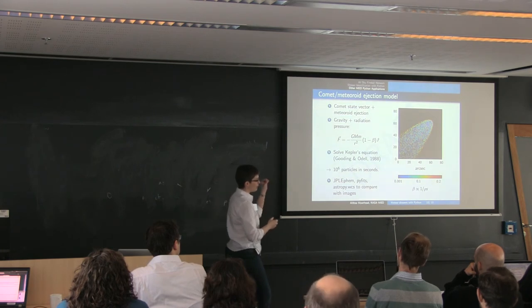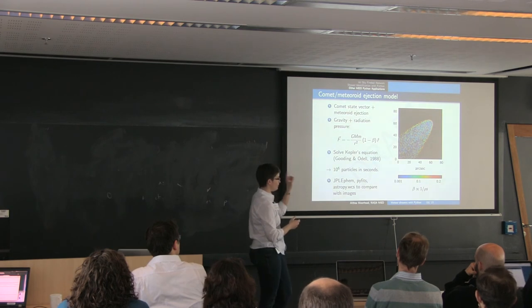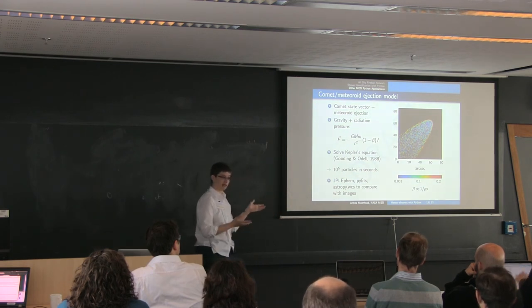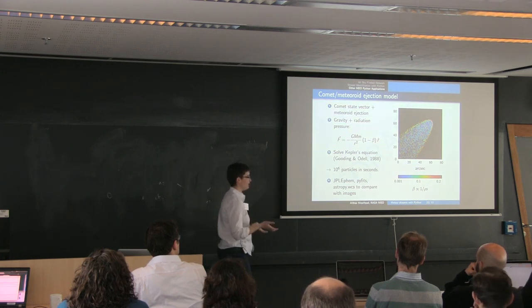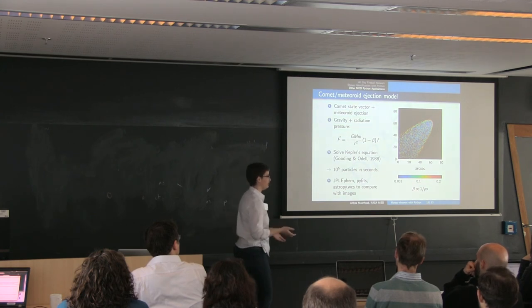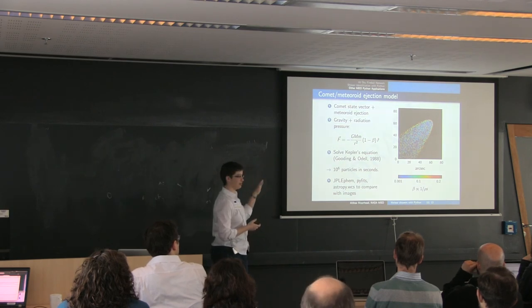And what we do is we parameterize the particles instead of just using size, instead we use this beta, which is the ratio of radiation pressure to gravity. So since those are both inverse square laws, then this makes it easy because you can just pretend it's still on a Keplerian orbit, just with a reduced central force. So as long as you have a good Kepler's equation solver, you can generate these cometary coma simulations very quickly.